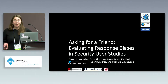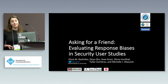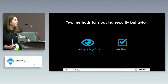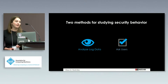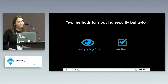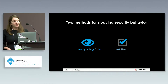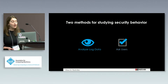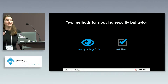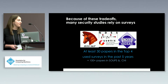Security user studies and surveys have been increasingly used in security research, and one of the primary questions is how well they assess real-world behavior. Typically there are two methods for studying end-user security behavior: analyzing log data records — working with a company to obtain logs of how people reacted to a particular prompt or warning message — or asking users to report how they would intend to behave in response to a particular warning or message.